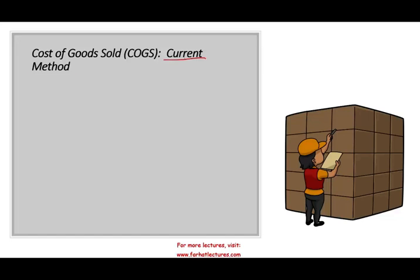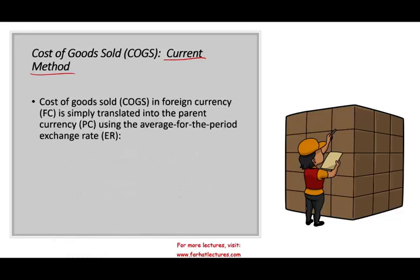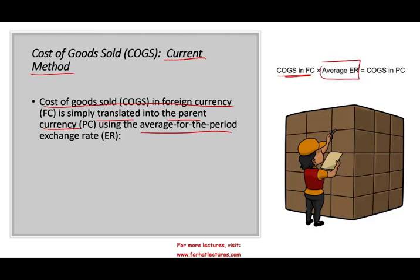Let's look at the current method first. The current method is the easy method. Simply, we're going to take cost of goods sold in the foreign currency and translate it into the parent company using the average rate for the period. The current method is pretty straightforward — not only for cost of goods sold but for all expenses. You take the expense in the foreign currency, multiply it by the average exchange rate, and you get your cost of goods sold in the parent company currency.